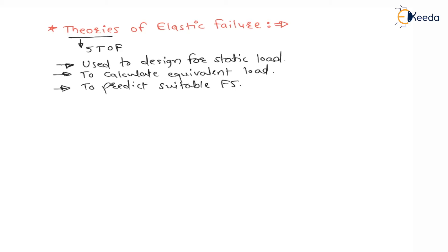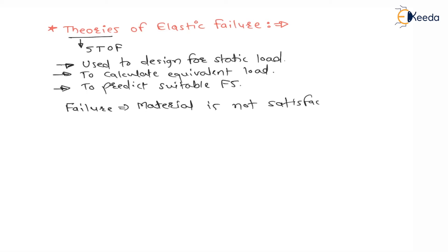Before understanding the 5 theories of failure, we have to understand what is the meaning of failure. Failure is nothing but whenever a component is not satisfactorily working, then it is always considered as failure. Material is not satisfactorily working — this is called failure of that component.